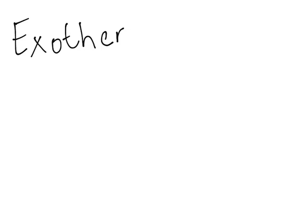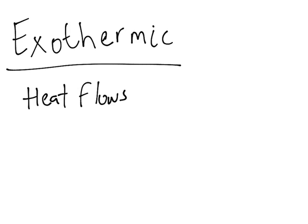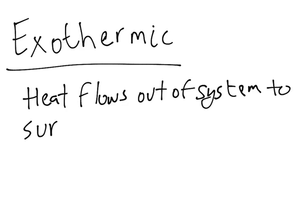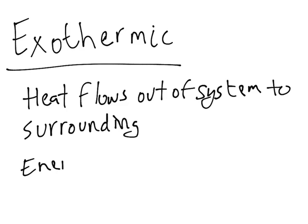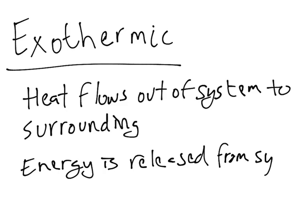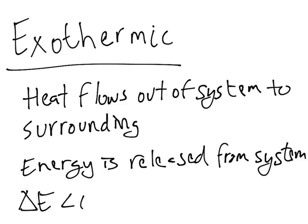So let's first talk about exothermic. In exothermic processes, heat will flow out of the system into the surroundings — so heat flows out of the system to the surroundings. In other words, energy is released from the system. That will give us a delta E value of less than zero, so negative.